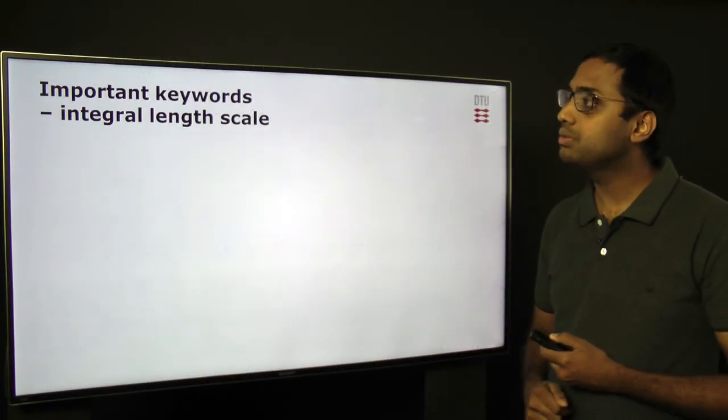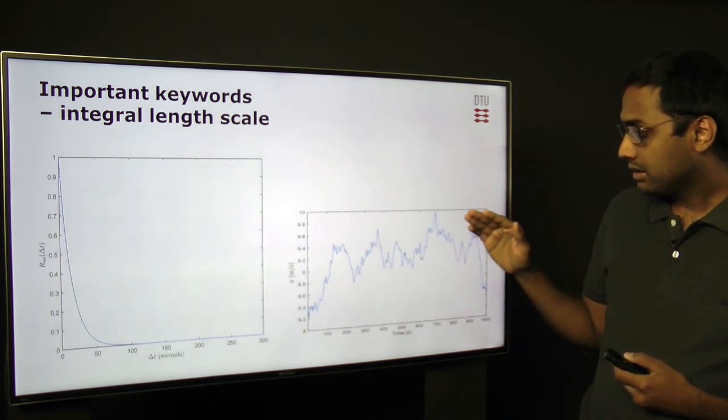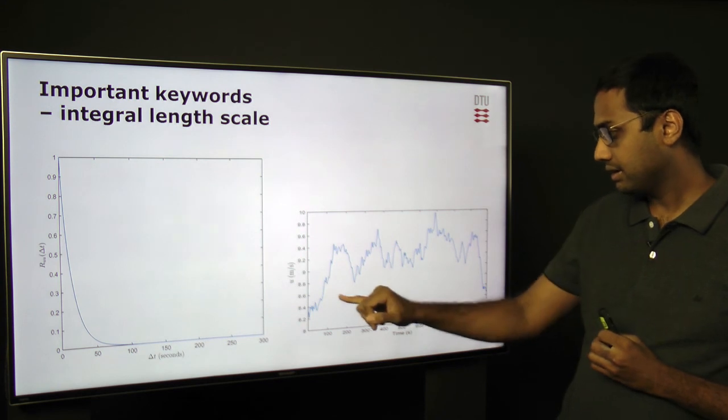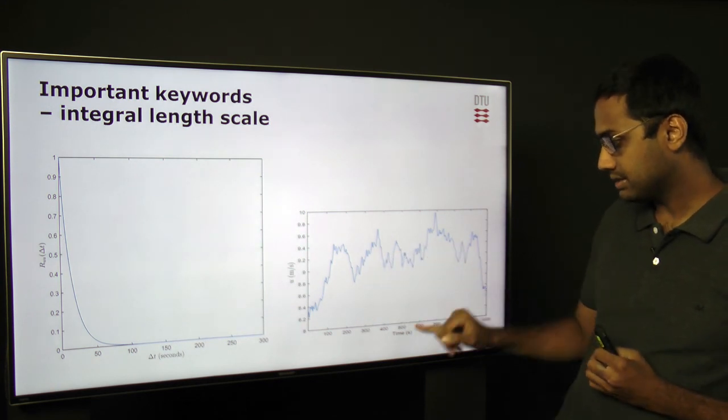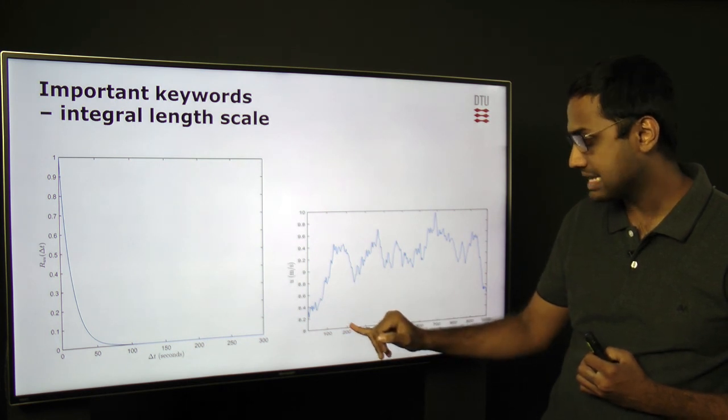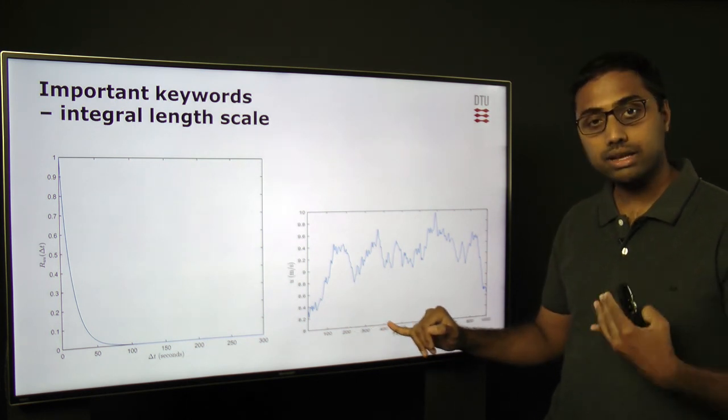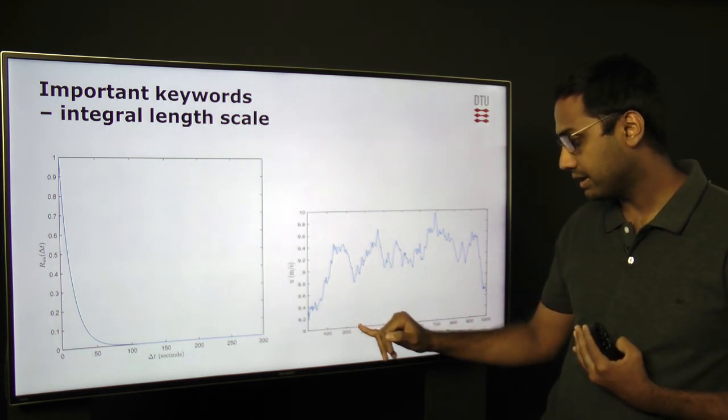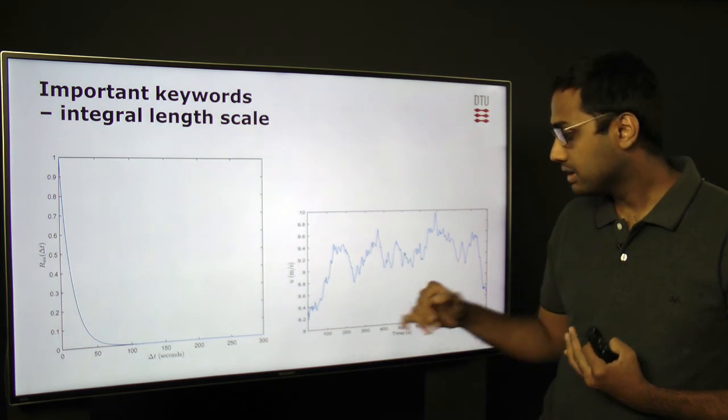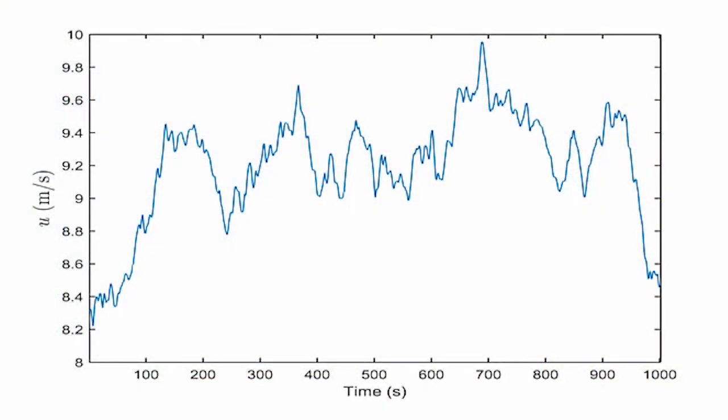Another important keyword is the integral scale. Physically, what integral scale means is that if we take a look at this time series and if we simply take a look at the wind speed at 200 seconds, what can we say about the wind speed at 250 or 300 seconds, and 100 seconds, just by looking at the time series?